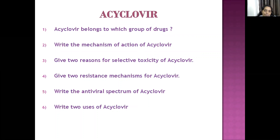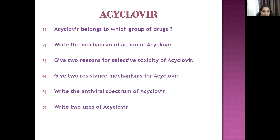Two resistance mechanisms of acyclovir: first, a mutation produces an altered viral thymidine kinase that cannot convert acyclovir to acyclovir monophosphate; second, the viral DNA polymerase develops decreased affinity for the active acyclovir triphosphate form. The antiviral spectrum of acyclovir includes herpes simplex virus infections (HSV-1 and HSV-2) and varicella zoster virus (VZV).